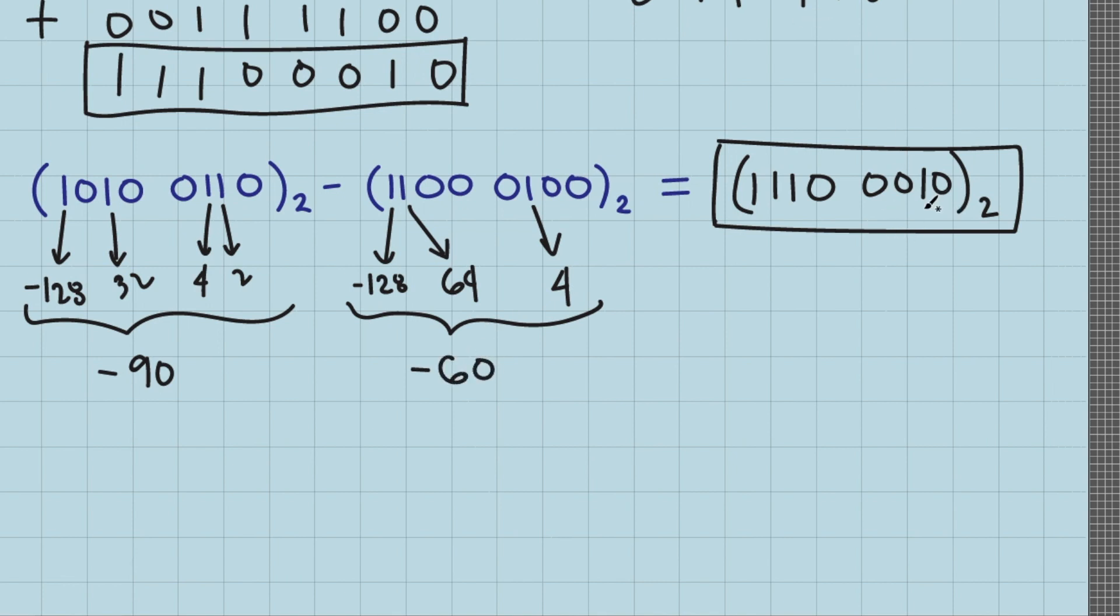Finally, this position has a weight of 2, this one is 32, this one is 64, and this one has a weight of negative 128. If we calculate the sum of these weights, this equals negative 30.